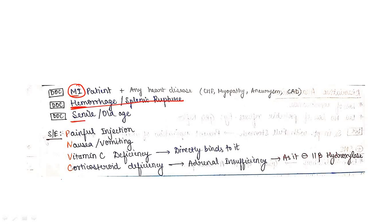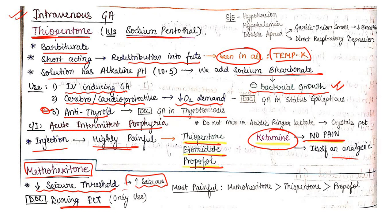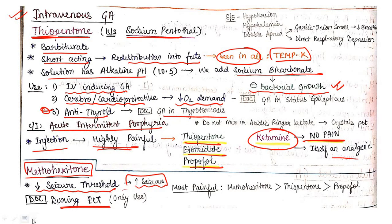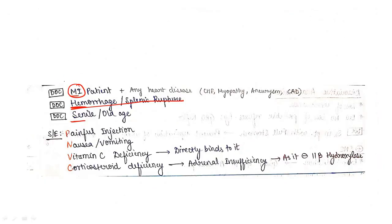Methohexitone is drug of choice in MI patients, hemorrhagic or splenic rupture, and senile patients. Remember: methohexitone is most hemodynamically stable. M for MI, H for hemorrhage, Stable for senile. Side effects: PNVC - painful injection, nausea vomiting, vitamin C deficiency, and corticosteroid deficiency which may lead to adrenal insufficiency.